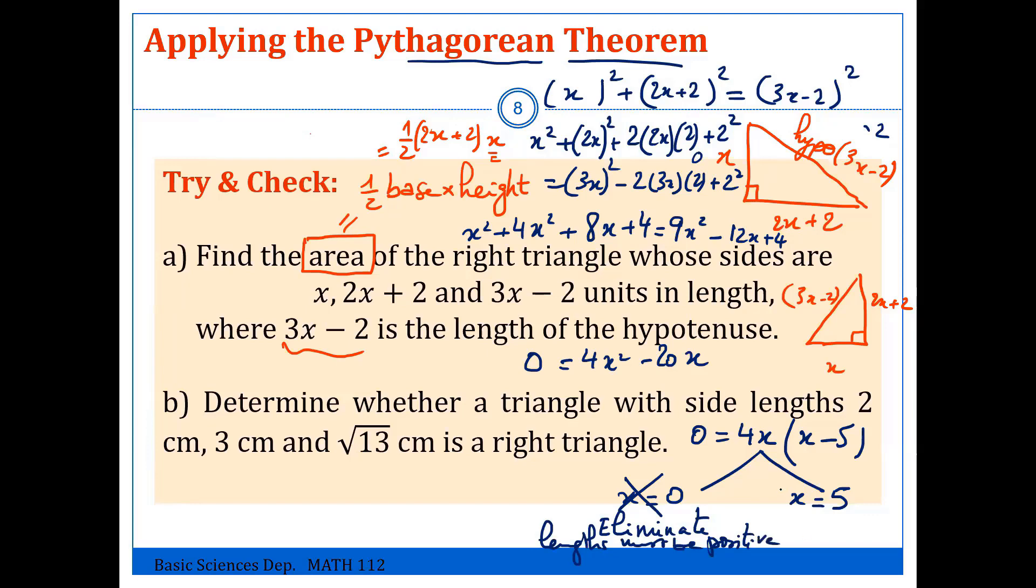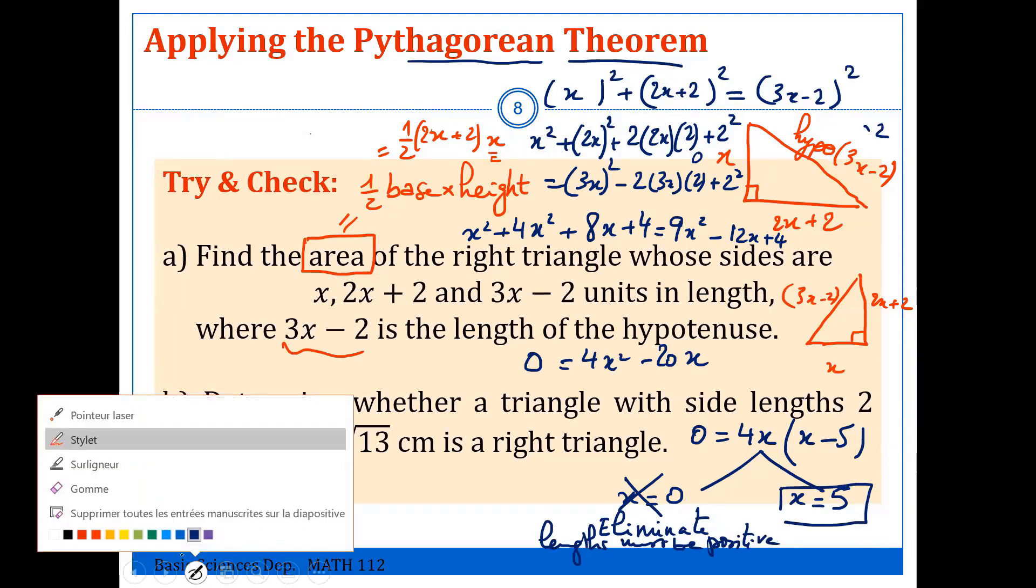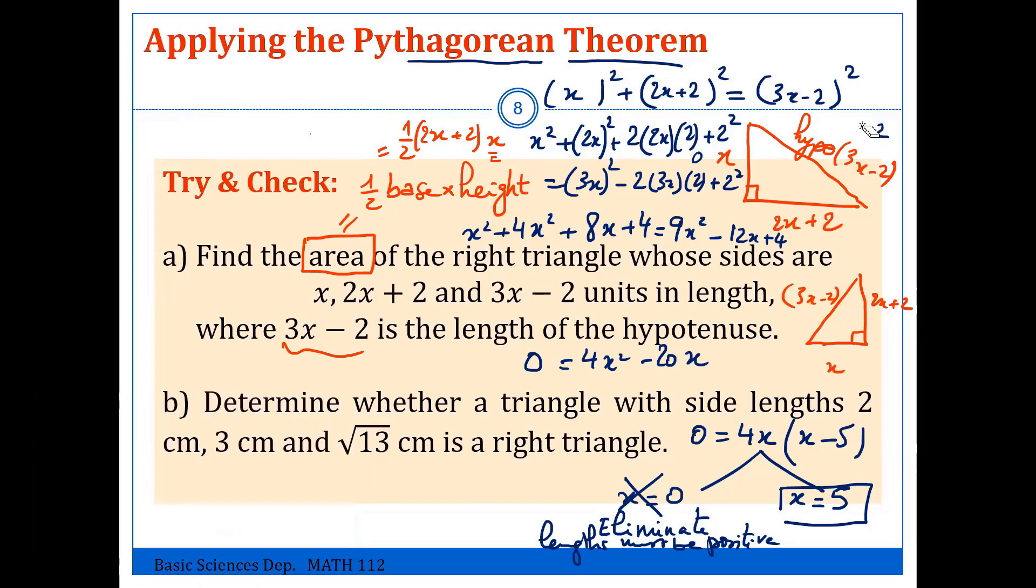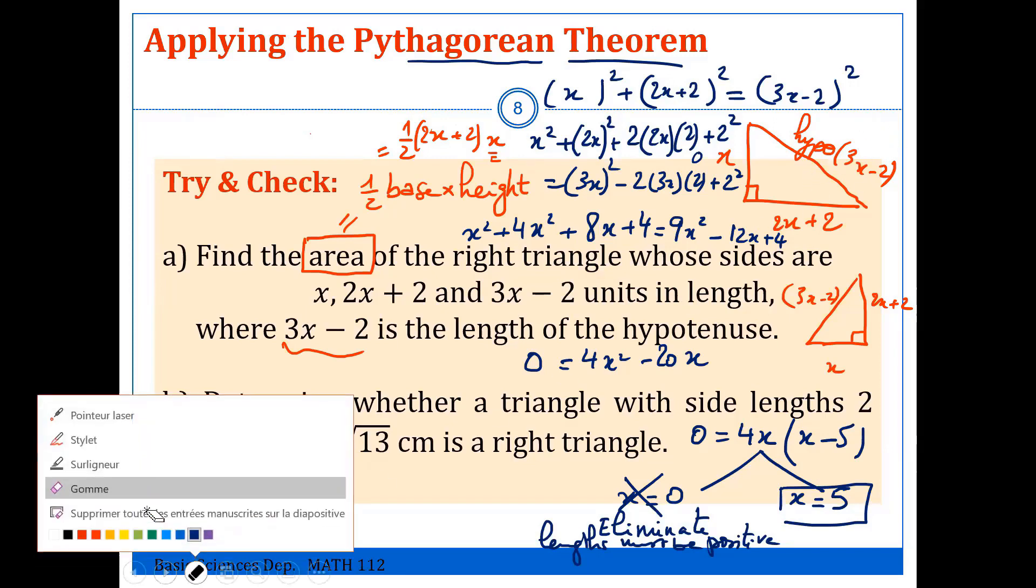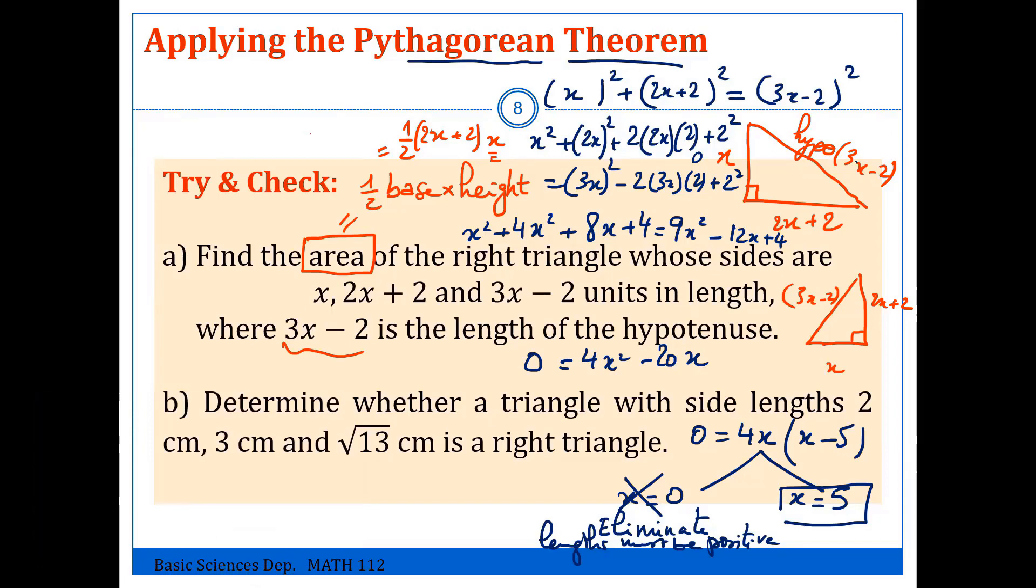And we keep only x equals 5, which gives—so here, 15 minus 2 is 13, 10 plus 2 is 12, and here 5.